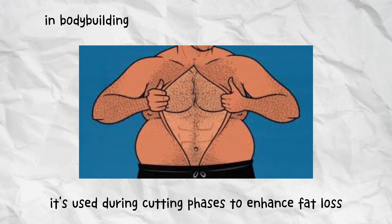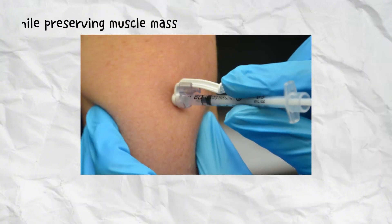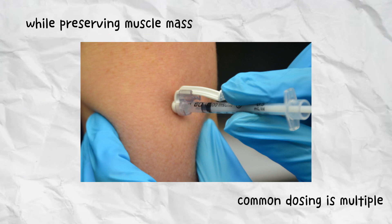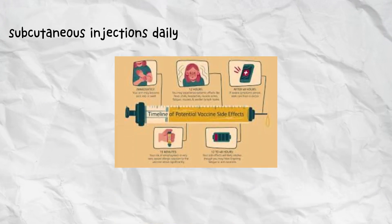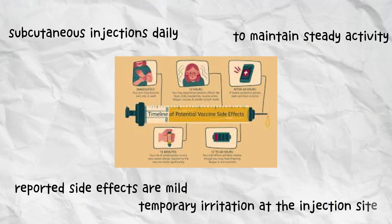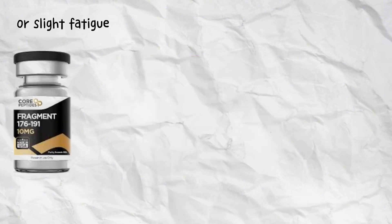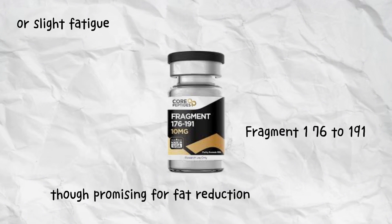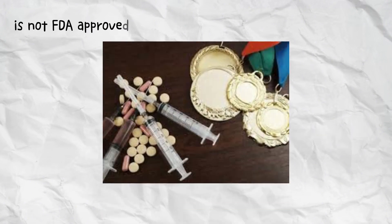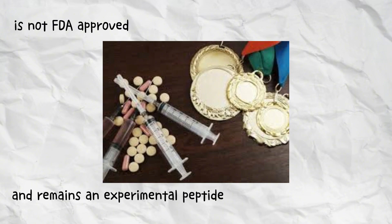In bodybuilding, it's used during cutting phases to enhance fat loss while preserving muscle mass. Common dosing is multiple subcutaneous injections daily to maintain steady activity. Reported side effects are mild: temporary irritation at the injection site or slight fatigue. Though promising for fat reduction, Fragment 176-191 is not FDA approved and remains an experimental peptide banned in sports competition.